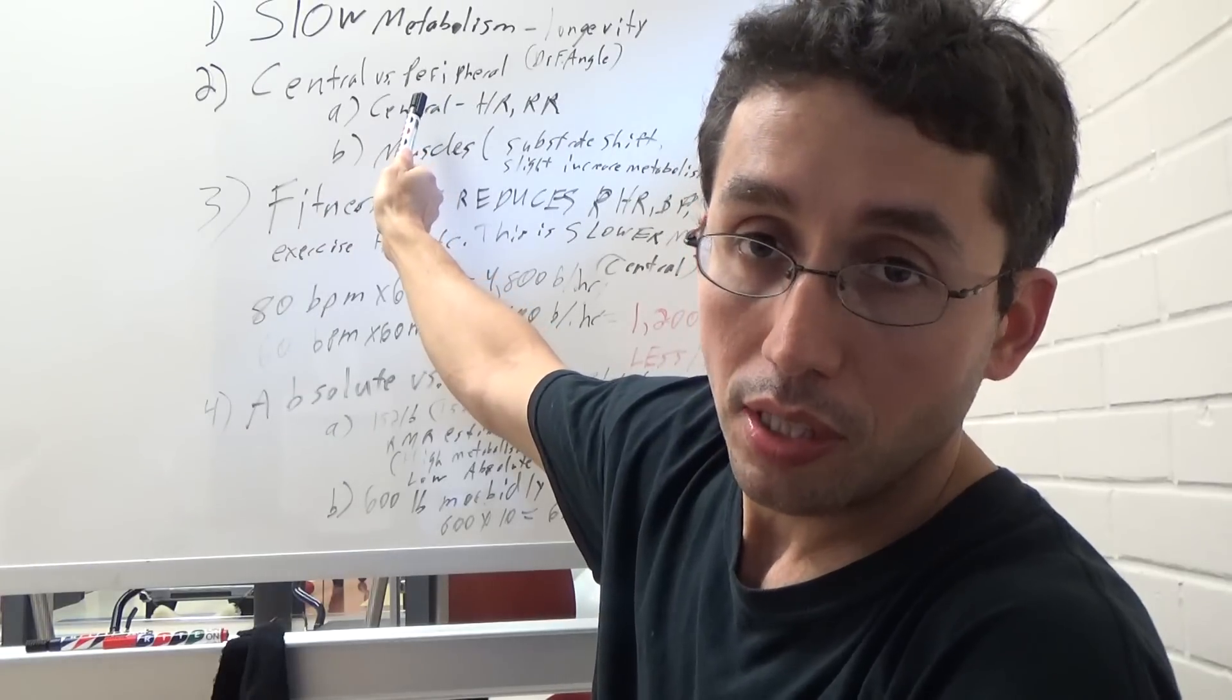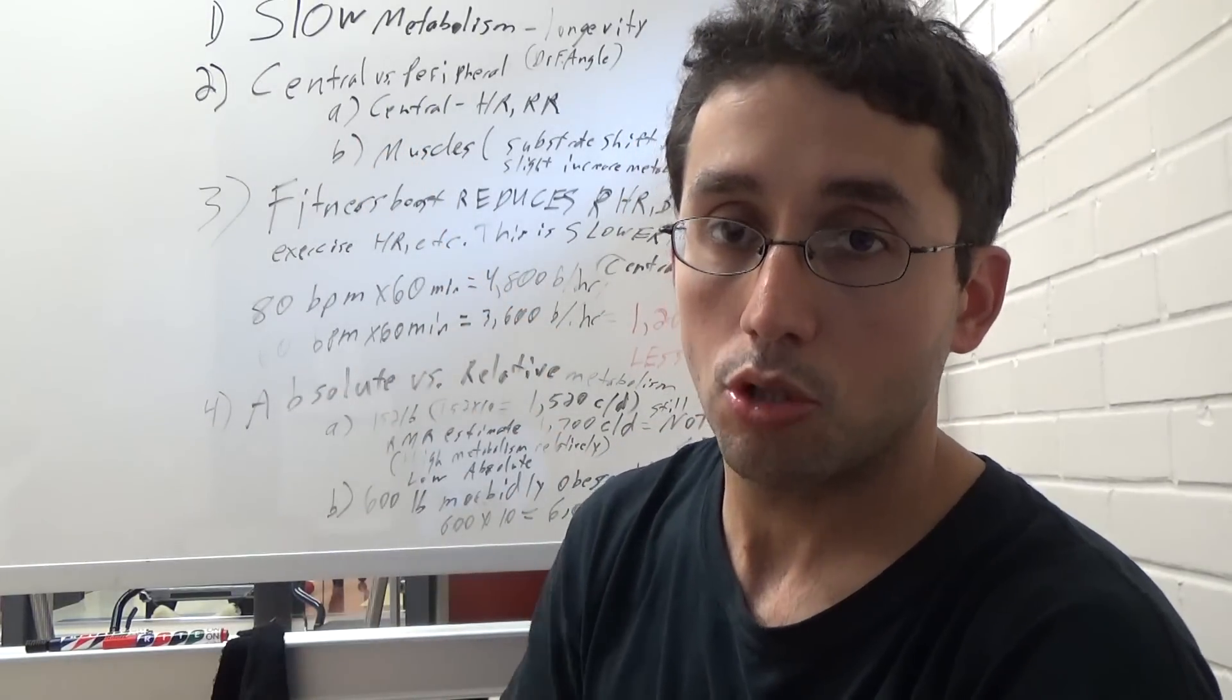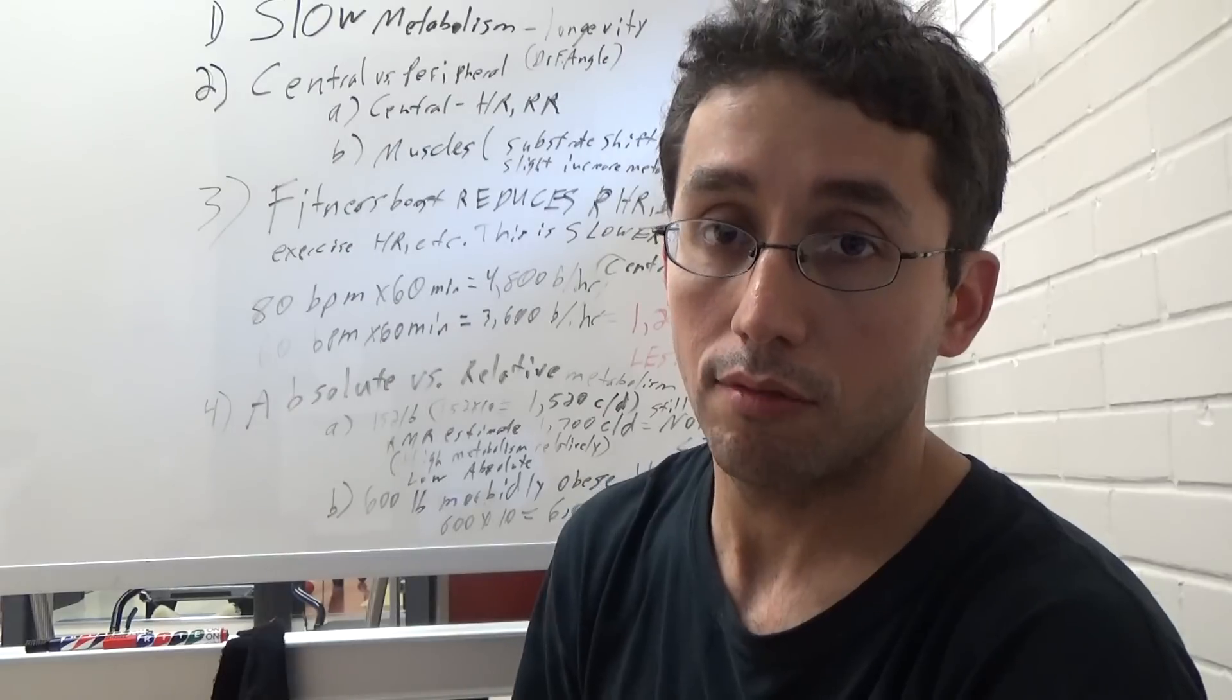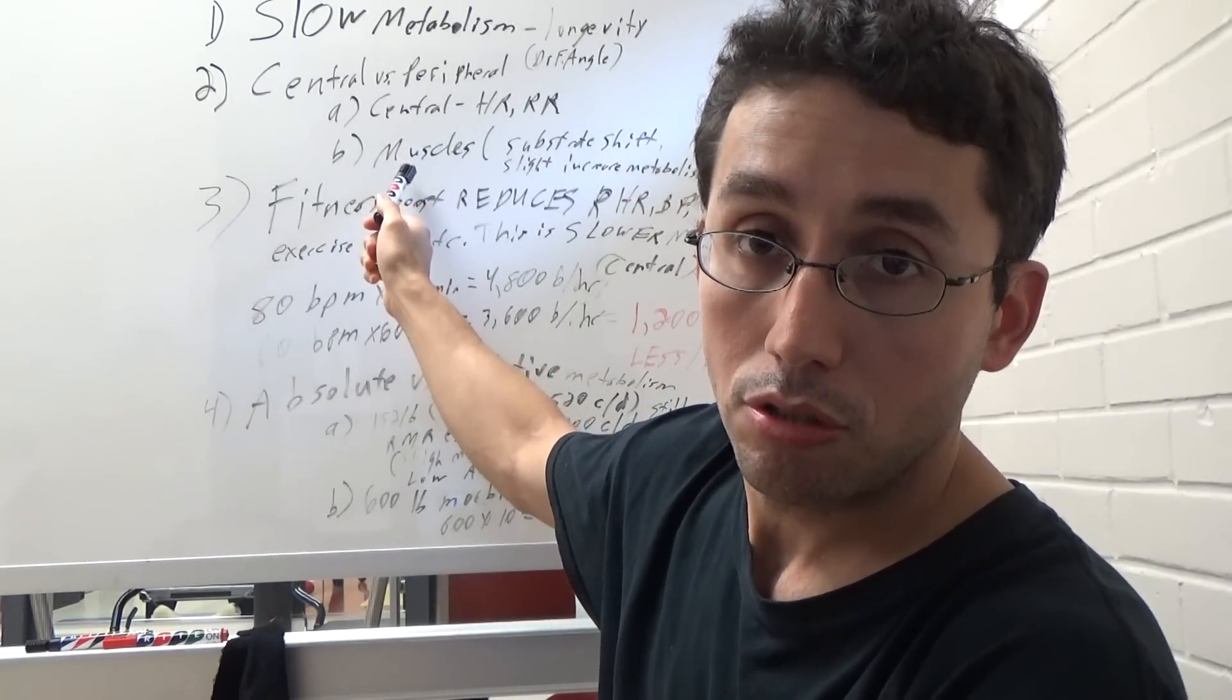Central versus peripheral metabolism. Central metabolism has to do with resting heart rate, respiratory rate, your central nervous system, organs. Then you have peripheral metabolism, which has to do with muscles, muscle tissue mainly.